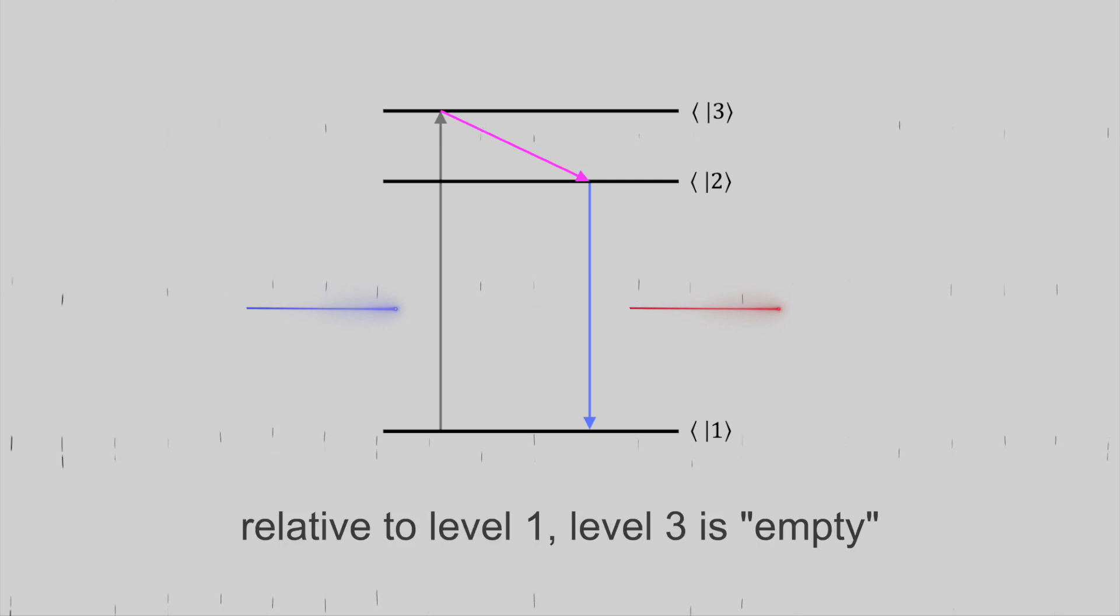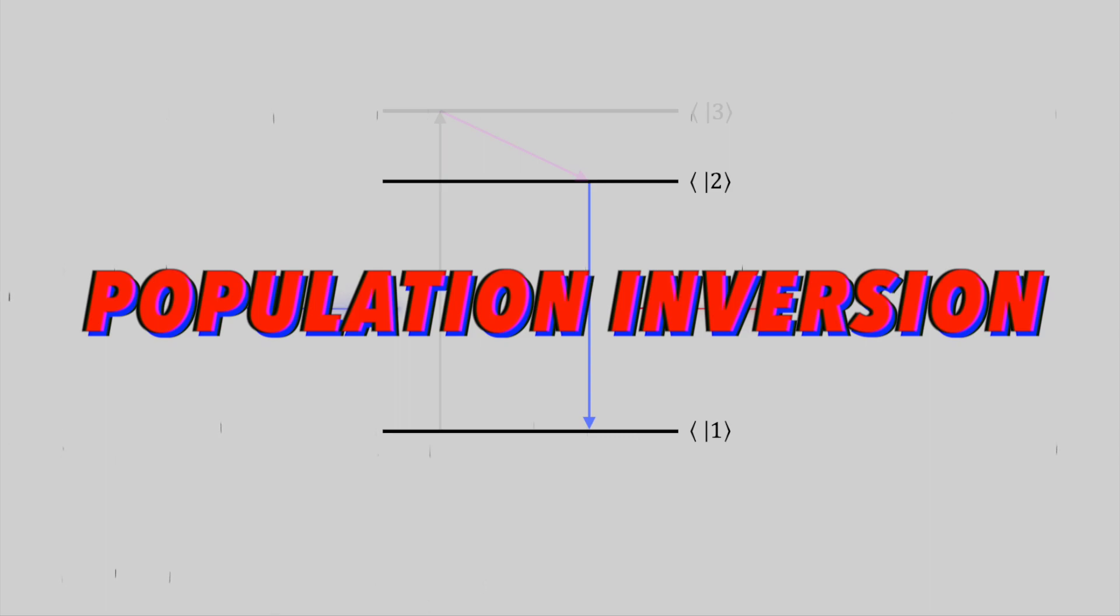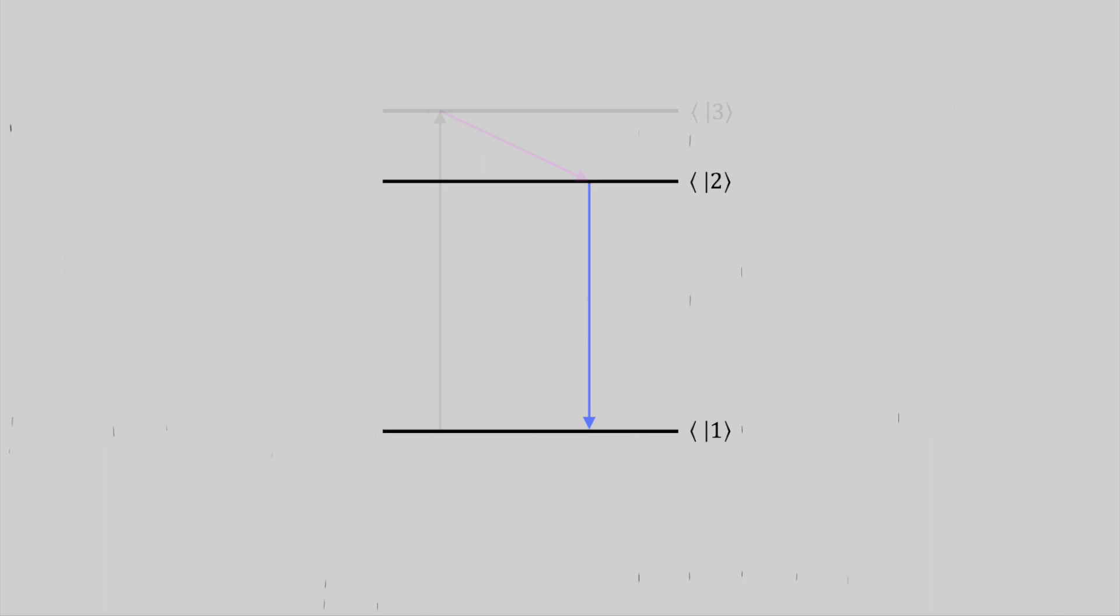So if we just pump in enough energy to the material, we will basically always excite electrons from one to level three. So this 50-50 problem never happens between levels one and three. And this now allows us to achieve the population inversion that we require from level two with regards to level one. And now we have a laser.